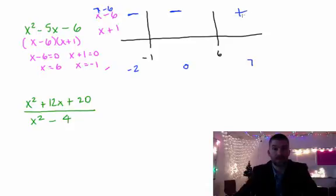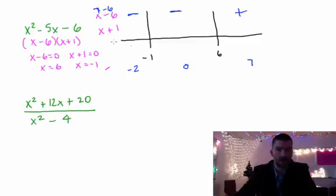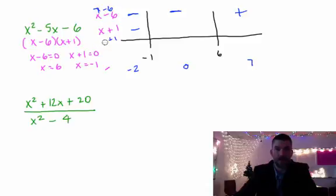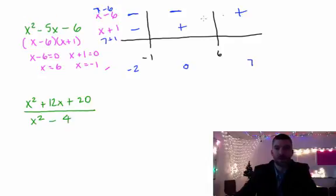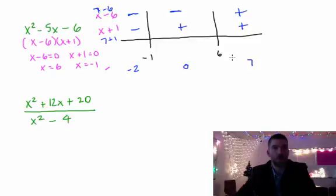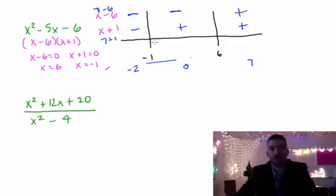Now doing the same thing for the (x plus 1) factor using the same test numbers. Negative 2 plus 1 gives a negative number. Taking out negative 2 and putting in 0: 0 plus 1 is positive. Putting in 7: 7 plus 1 is positive. Remember, with a sign chart we're not interested in the actual number — there are too many to pick. We just want to know what sign the function has.